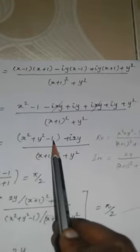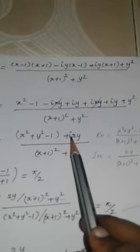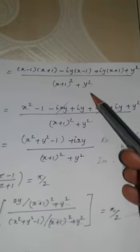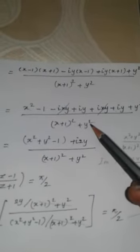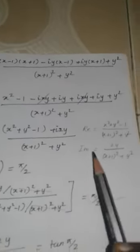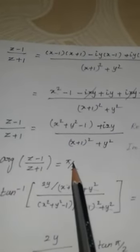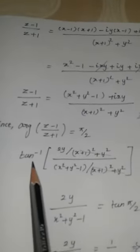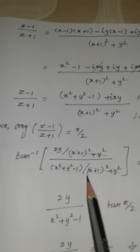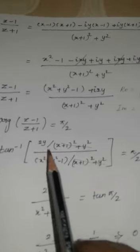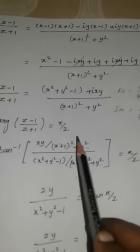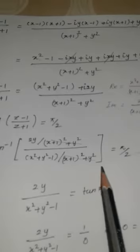So the expression simplifies to: real part = (x² + y² − 1)/denominator, imaginary part = 2y/denominator. Since the denominators are the same, they cancel when applying the argument formula: tan⁻¹(imaginary part / real part) = π/2.